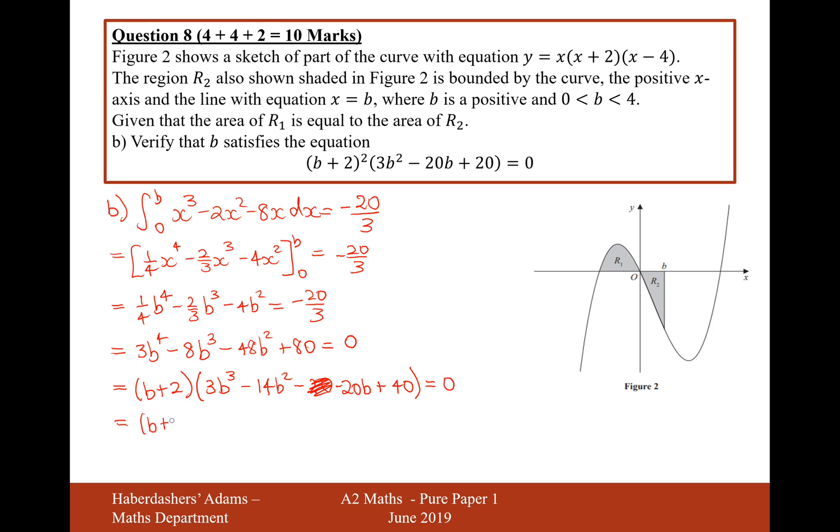We need to do another factor of B plus 2, so another bit of algebraic division. Dividing by B plus 2, that would be 3B squared. That gives us plus 6B squared. We need minus 20B to make it minus 20B squared. That gives us minus 40B. We don't want minus 40B, we want minus 20B, so we want plus 20. That gives us plus 20B, which gives us up to minus 20B, and 20 times 2 is 40. So just a bit of algebraic division between these lines.